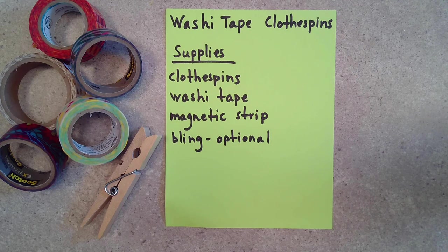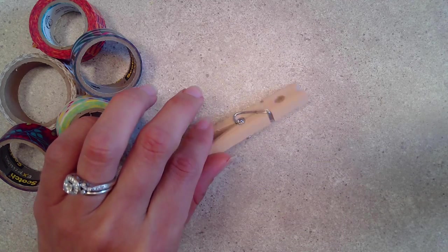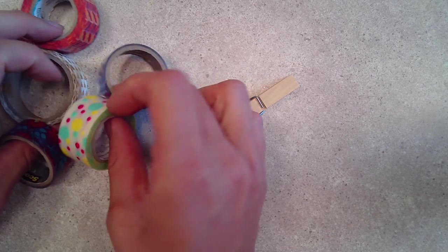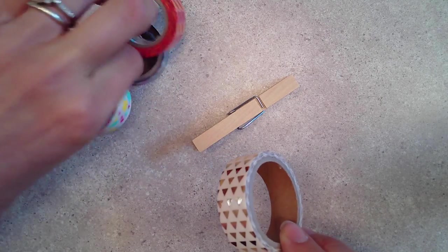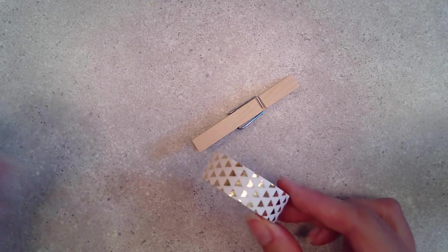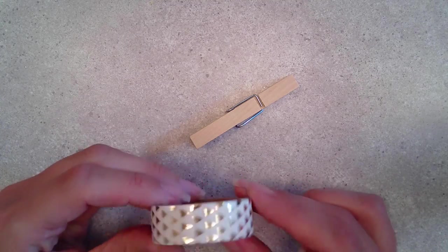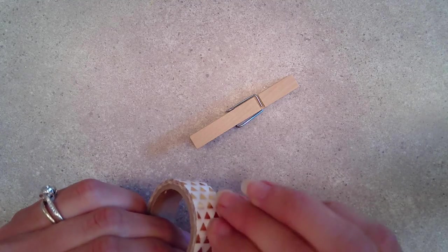So we will get started. First thing we're going to do is take our clothespin and choose washi tape to cover it. I have a lot of varieties here and I'll use this one. If you've never used washi tape before, it's practically the same thing as tape, except it has a cool design on one side and then a sticky side.